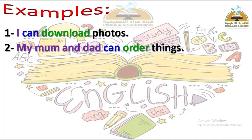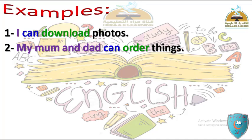الجرامر بتاعنا النهارده: modal verb 'can'. مثال: I can download photos - يعني أنا أستطيع أن أحمل صور. كلمة 'can' معناها يستطيع، وبتيجي بعد الـ subject. الشرط بتاعها أن الـ verb اللي هيجي وراها يكون infinitive بدون أي إضافات، زي: I can download photos.